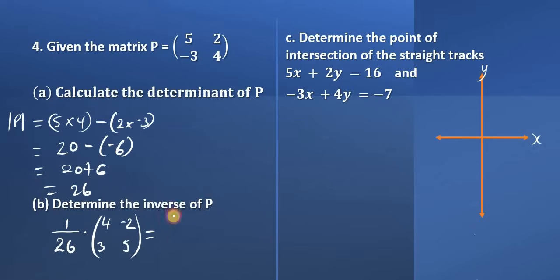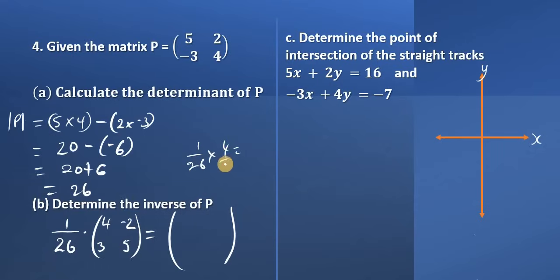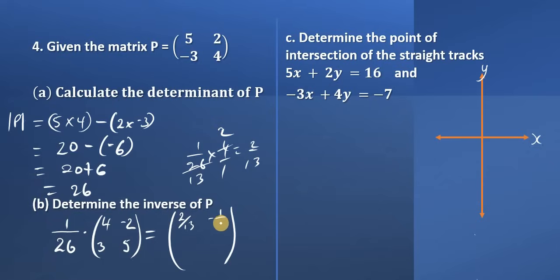We can leave it like that, or we can convert it to 1 matrix without the scalar outside. So we take 1 over 26 multiplied by 4, which gives us 2 over 13. Do the same for negative 2, which gives us negative 1 over 13. Do the same with the 3, giving us 3 over 26. And the 5 gives us 5 over 26.